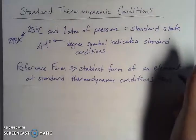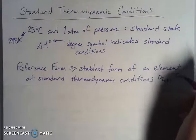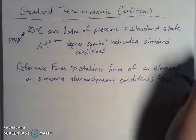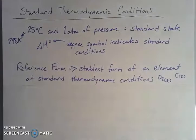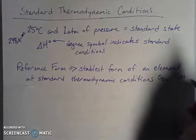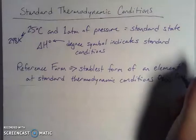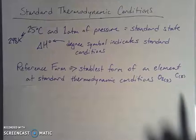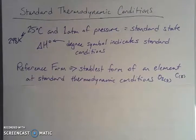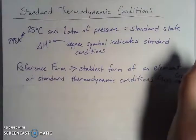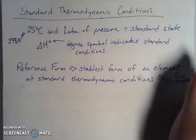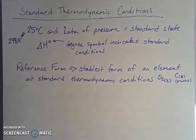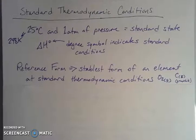We could also talk about carbon. Carbon under standard conditions is a solid, and that solid is graphite. Carbon has different what are called allotropes — different forms of the same element. Carbon can be either graphite or diamond. Under standard thermodynamic conditions, carbon is a solid and that solid is graphite. That's the allotrope that is the reference form of carbon, indicated as a solid with the 's' in parentheses.